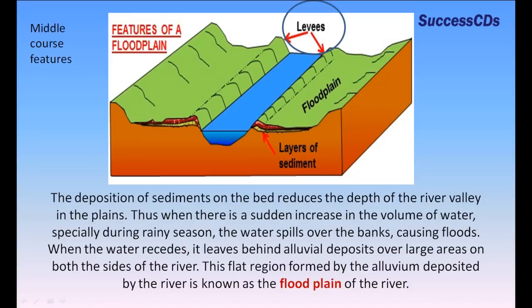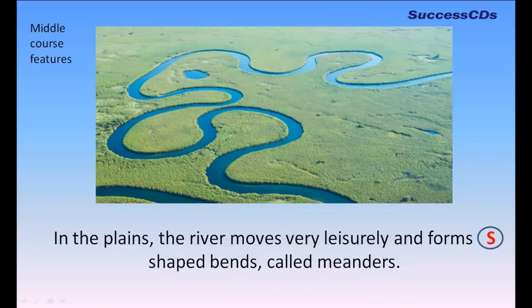After repeated floods, deposits pile up along the banks of the river, forming raised embankments called natural levees. In the plains, the river moves very leisurely and forms S-shaped bends called meanders.